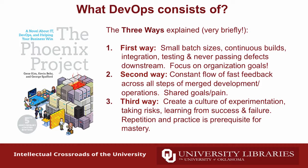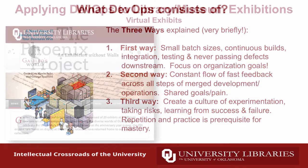There are three ways things go through our departments. The way you want to get it done is small batch sizes, continuous builds, integration testing, and never passing defects along in the system. The second way is a constant flow of fast feedback across all steps with shared goals. Then there's this idea of creating a culture of experimentation - it's okay to take risk, you know you're going to have some failure, there's no penalty as long as you learn from it and move forward. Repetition and practice are prerequisites for this to be mastered.